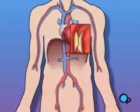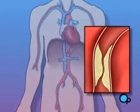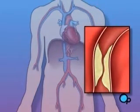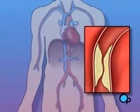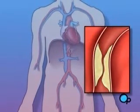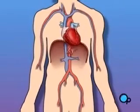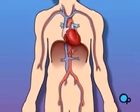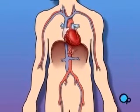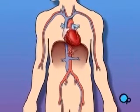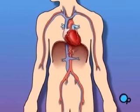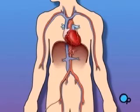Sometimes these blood vessels can narrow or become blocked by plaque deposits, restricting normal blood flow. In simple terms, a balloon angioplasty with stent insertion is a procedure used to increase the amount of blood flowing through the coronary artery. During a balloon angioplasty,